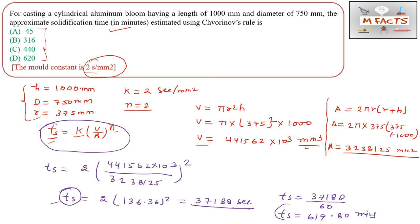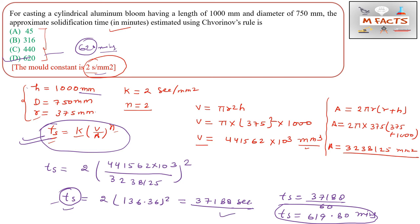Converting to minutes: ts = 37,188 ÷ 60 ≈ 619.80 minutes, which rounds to approximately 620 minutes. This matches option D in the question. I kept all units in mm throughout because k was also in mm units, and only converted to minutes at the final step by dividing by 60.